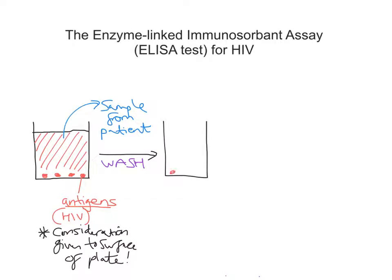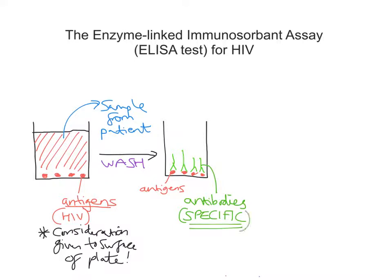So a specific antibody would bind to that antigen. I've drawn the antibodies with this characteristic Y shape that they have — the green represents antibodies that may be present within the sample from the patient. The red still represents our antigens, and these antibodies — the keyword here is specific — they specifically bind to those antigens.